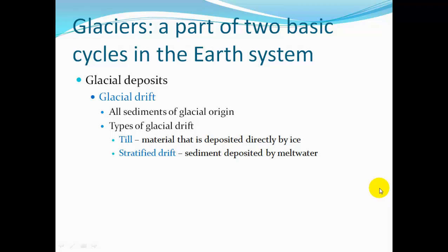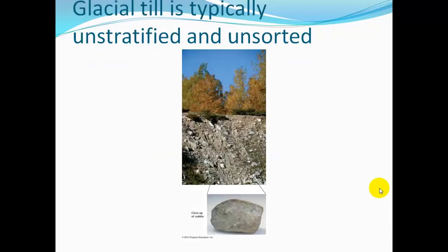The deposits that glaciers form — since they're picking up and pulverizing rock, they're also depositing rock and sediment. We call this glacial drift; all sediments of glacial origin are called glacial drift. There are types of glacial drift: till, which is material deposited directly by the ice and is not sorted — all kinds of sizes mixed together. Stratified drift is sediment deposited by meltwater and is sorted by size based on the speed of the meltwater flow.